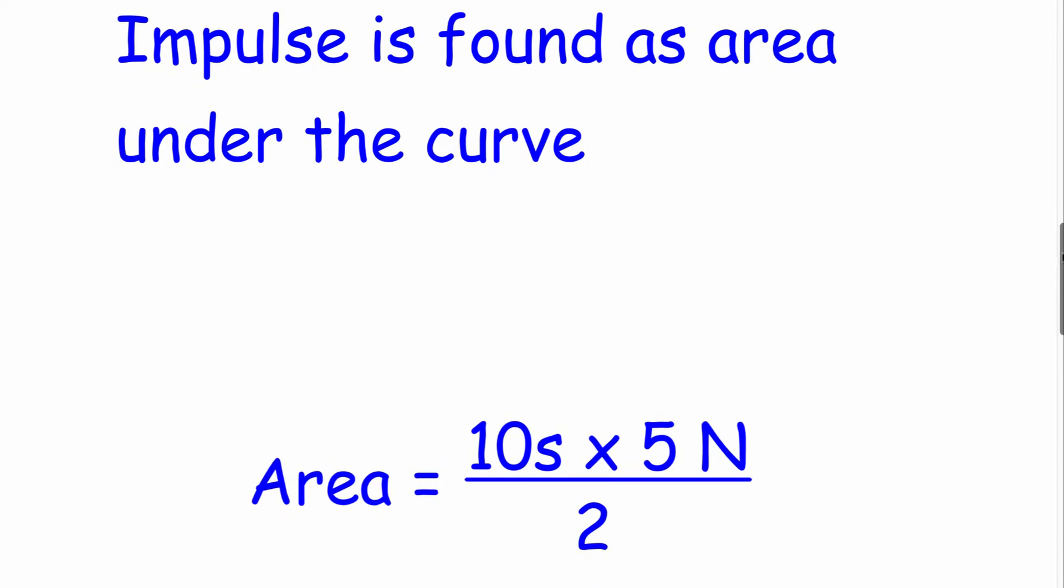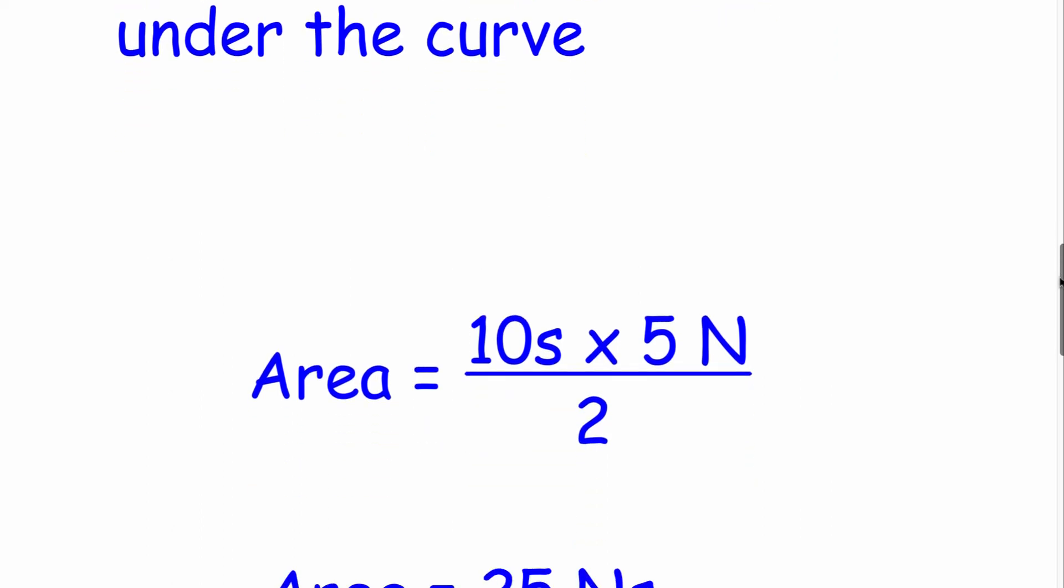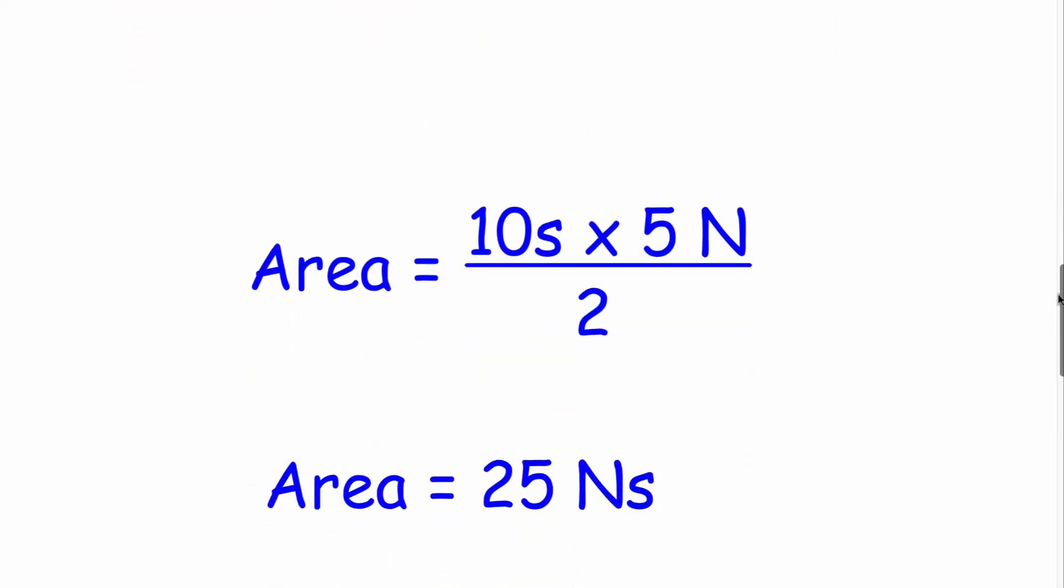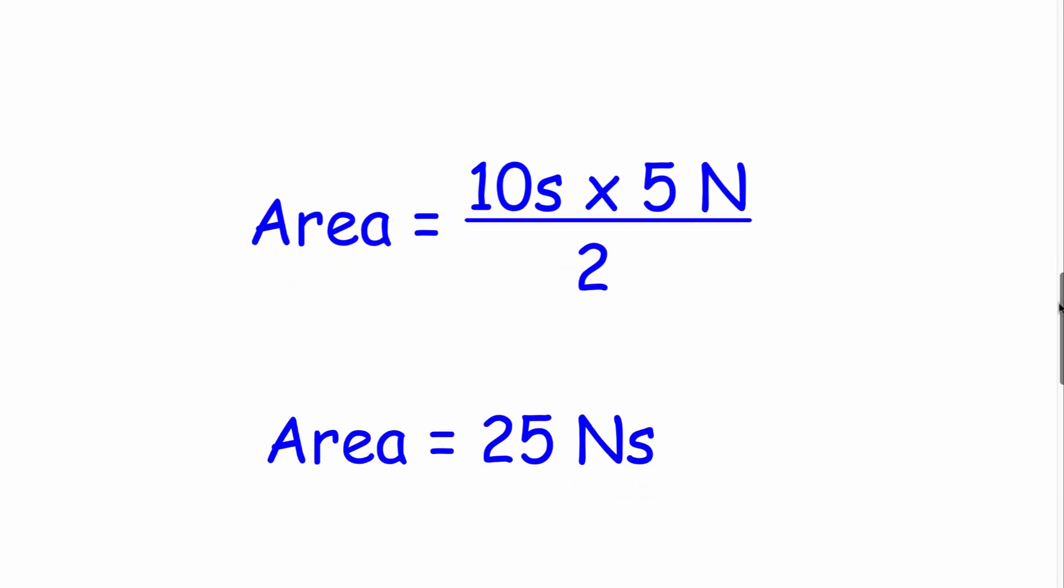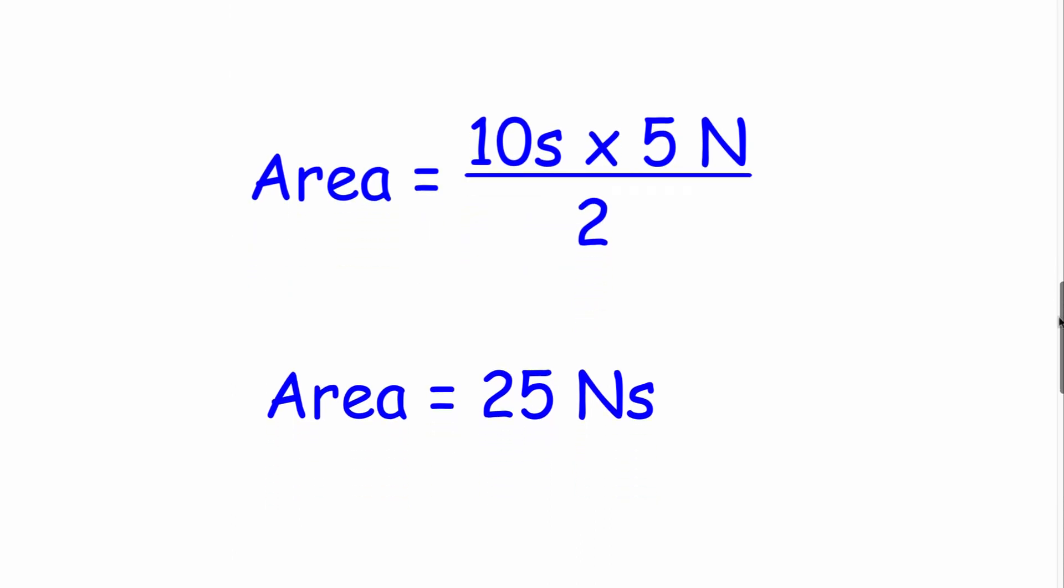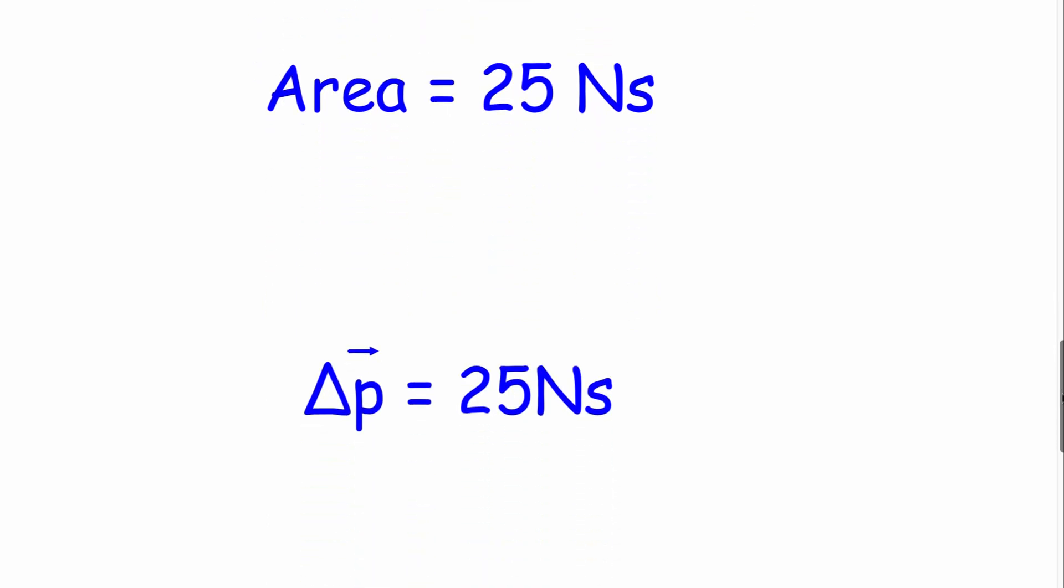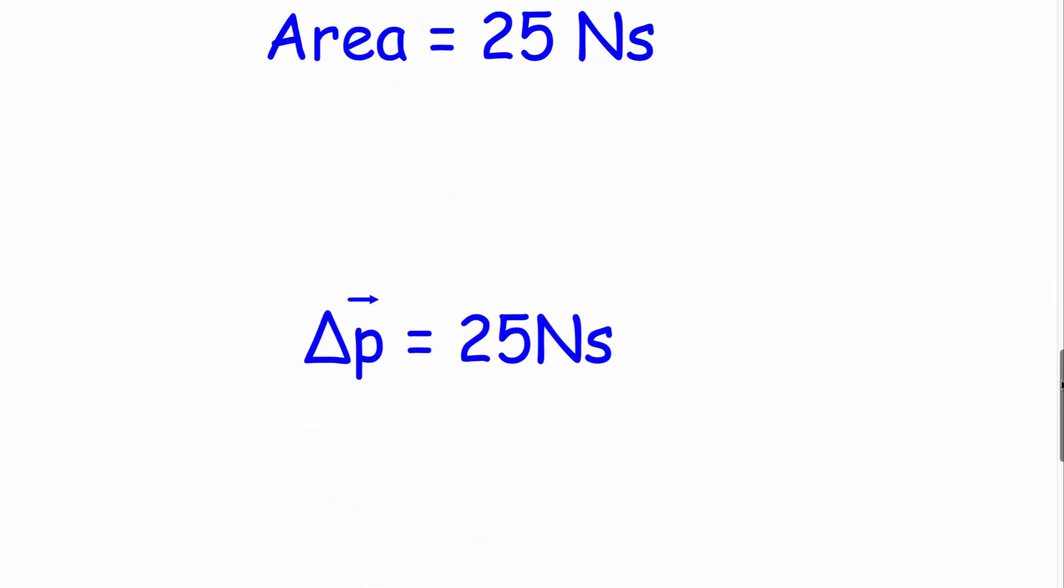The base is 10 seconds, the height is five newtons divided by two, giving us 25 and the units are newton seconds. And as we said earlier, the area under the curve is the impulse. So our impulse is 25 newton seconds.